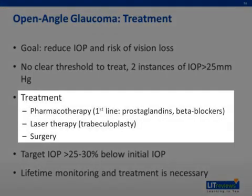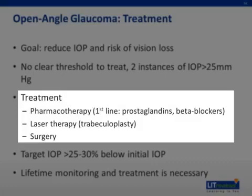The types of therapy include pharmacologic therapy. There are topical agents that increase aqueous outflow, such as prostaglandins, alpha adrenergic agonists, and cholinergic agonists; and those that decrease aqueous production, such as beta blockers and carbonic anhydrase inhibitors, and prostaglandins. Prostaglandins and beta blockers are the first-line agents, and combining drugs from different classes can increase efficacy.